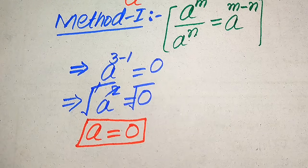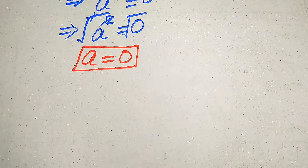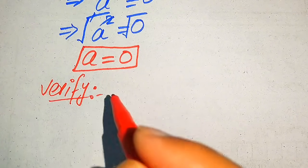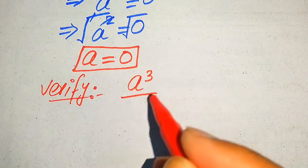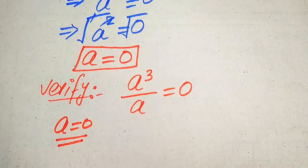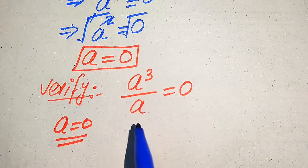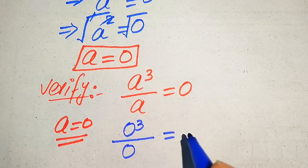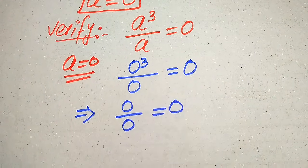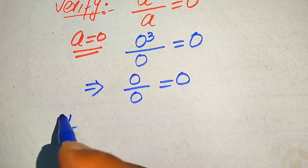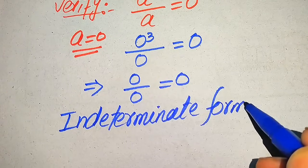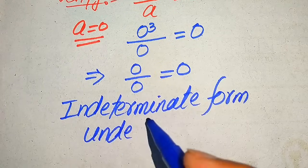In the next step we verify whether this root satisfies the given equation or is an extraneous root. We copy the given equation: a cubed divided by a equals 0. We substitute a equals 0 into the numerator and denominator. This gives 0 cubed divided by 0 equals 0, which becomes 0 divided by 0 equals 0. But 0 over 0 is called the indeterminate form — it is undefined.